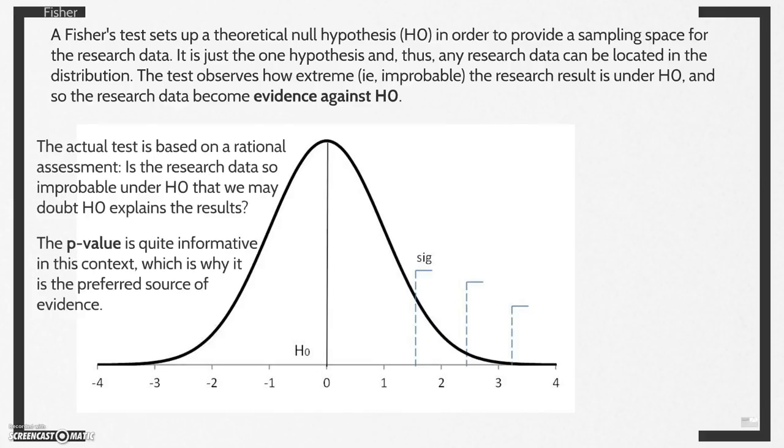The actual test is based on a rational assessment. Is the research data so improbable under the null hypothesis that we may doubt this null hypothesis explains the results? The p-value is quite informative in this context, which is why it is the preferred source of evidence.